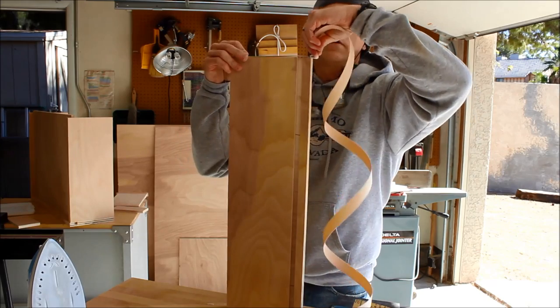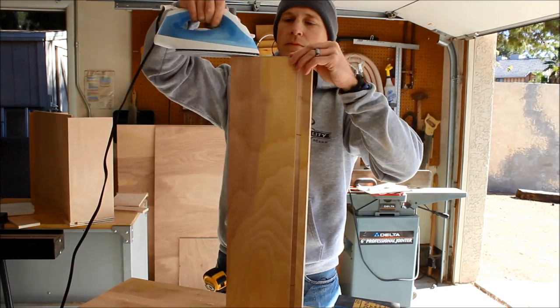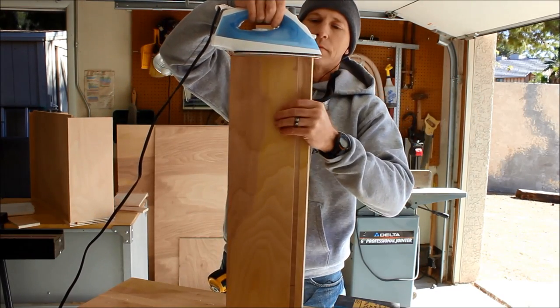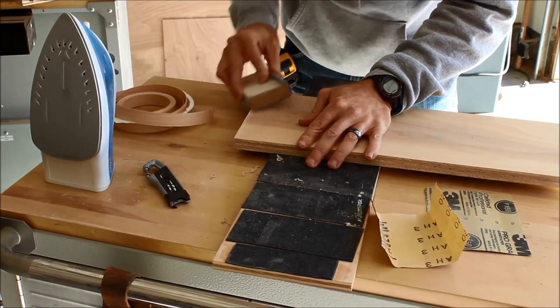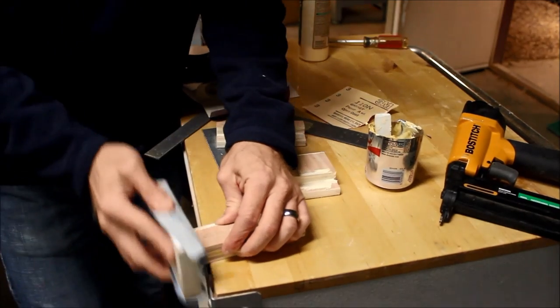I use two methods to clean up the edges. Edge banding will give you the cleanest look especially if you don't paint the wood. Another method is to use wood filler or spackle on the end grain. If you do this, you might see some of the edge through the paint.